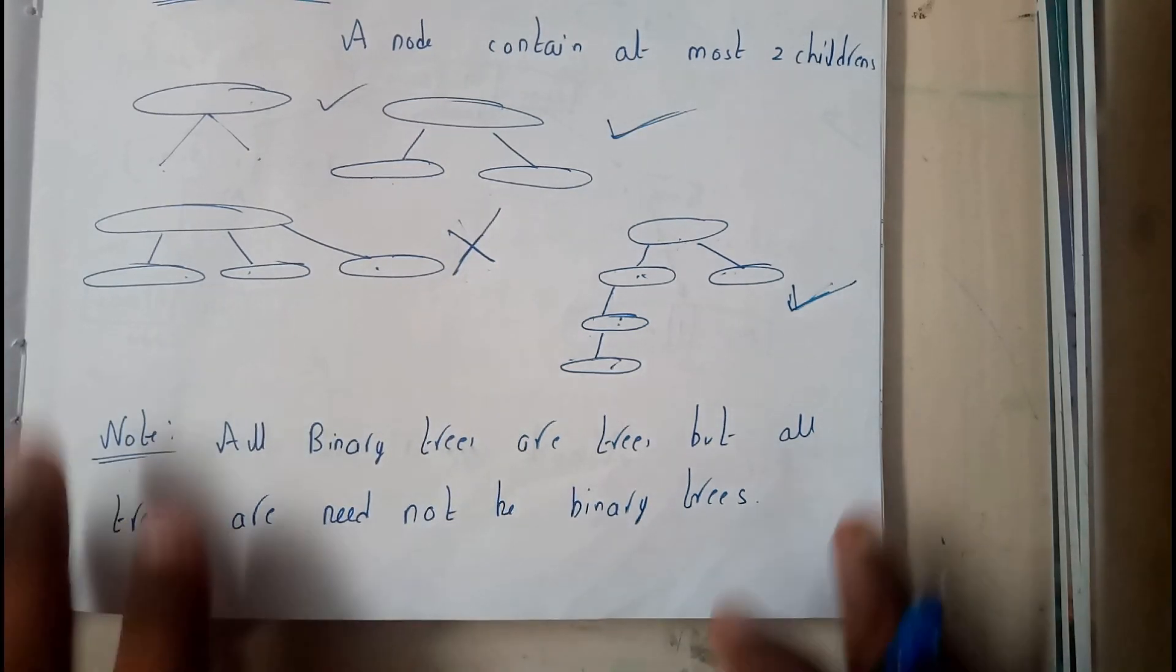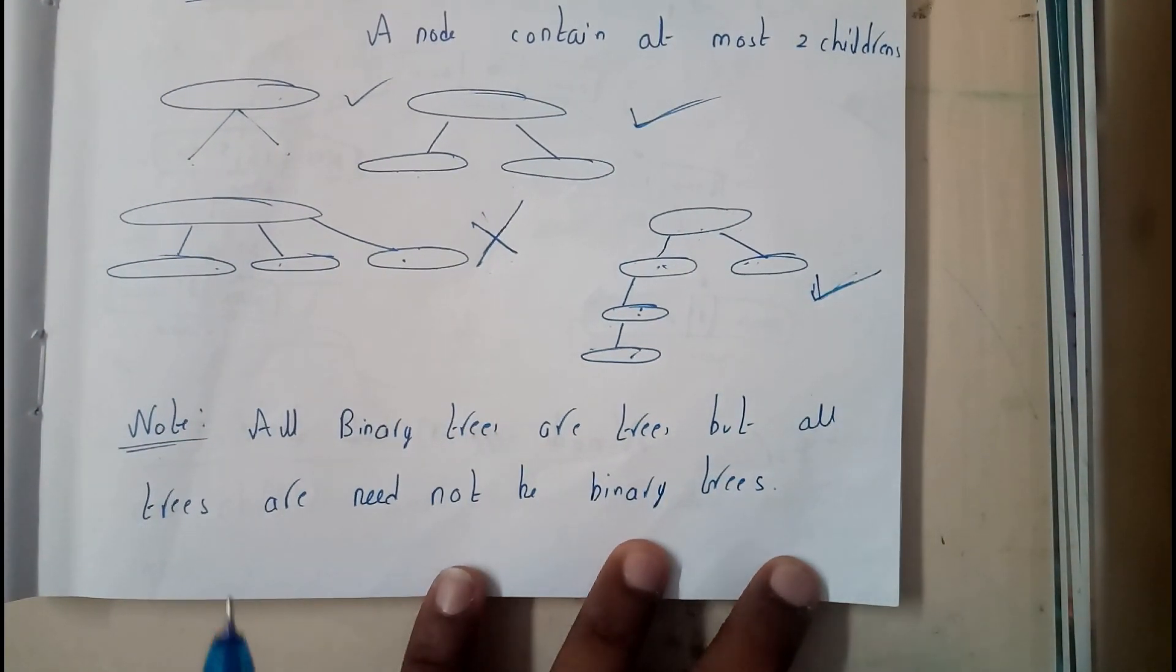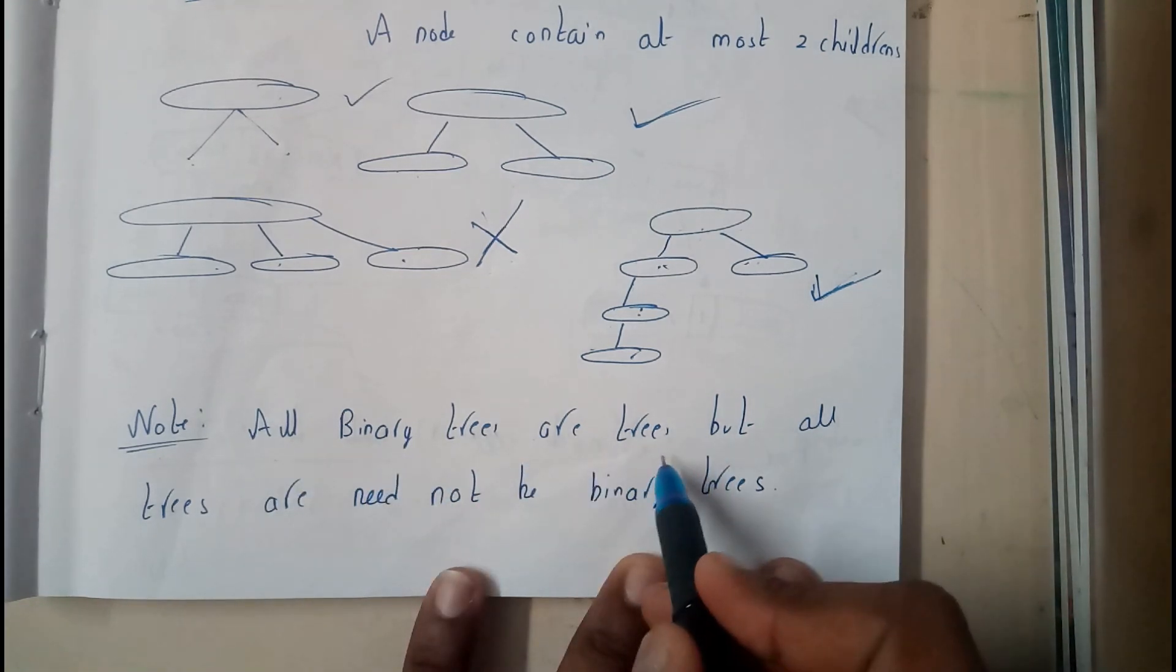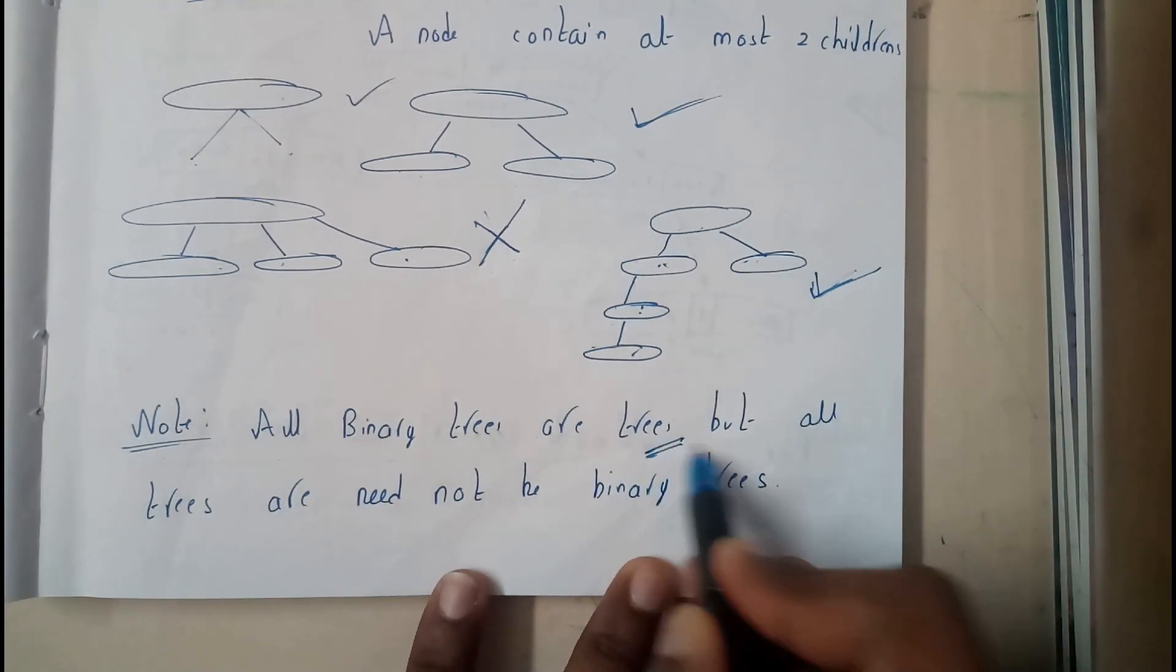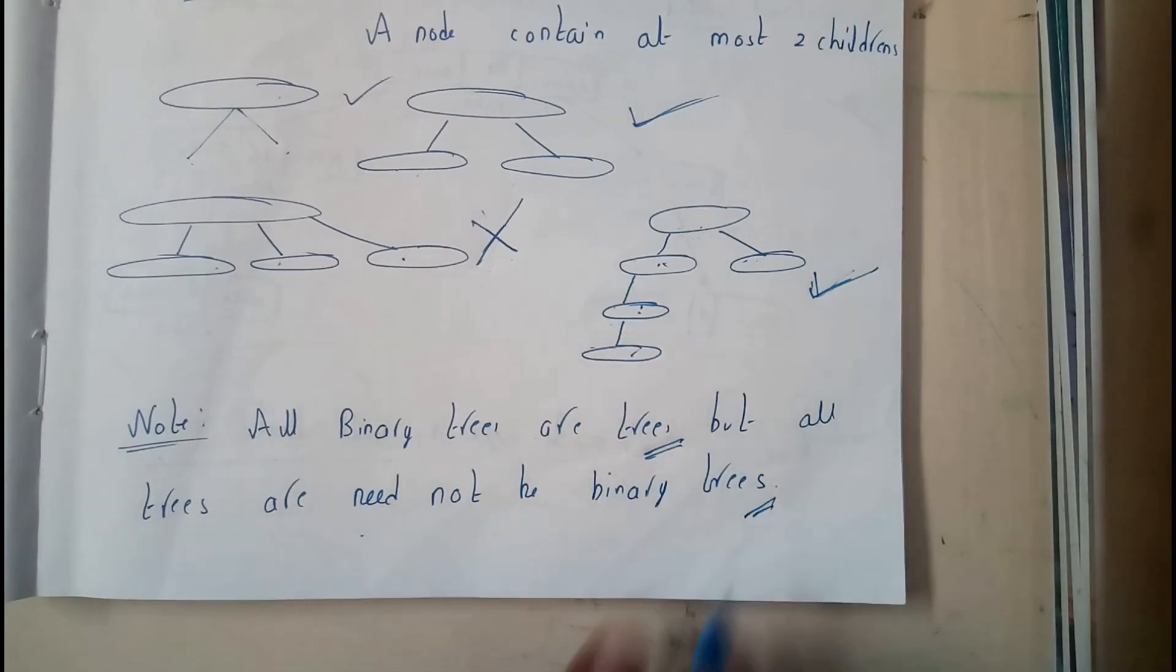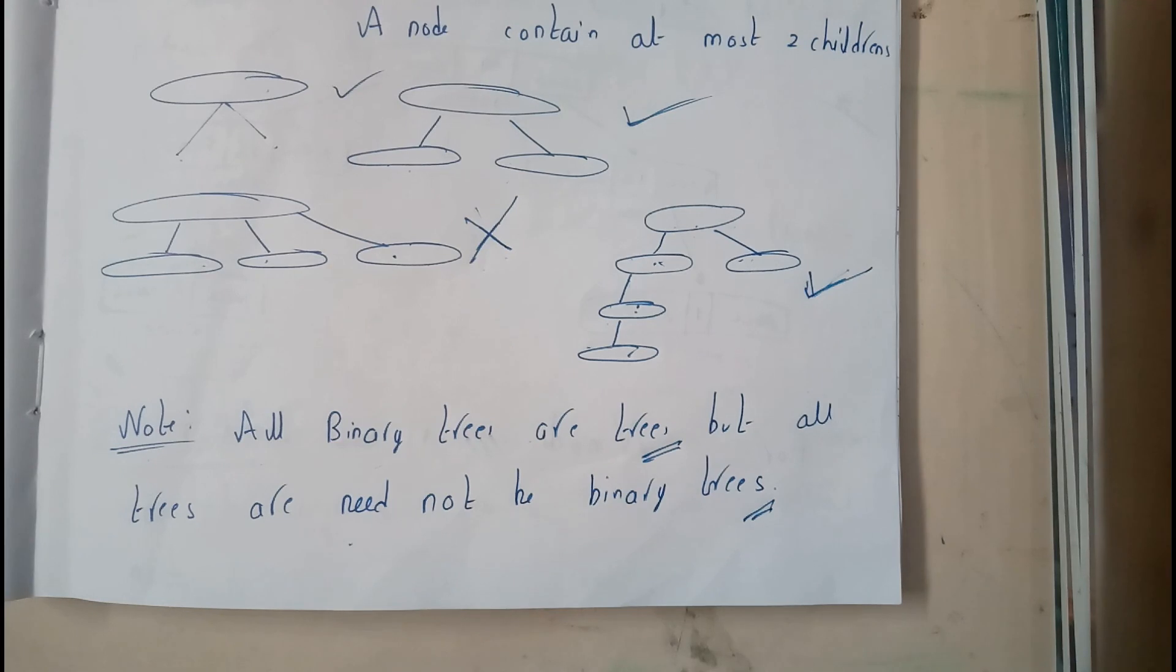So now let us go through a node or a particular condition which is important to remember. All binary trees are trees basically, but all trees are need not to be binary trees. So this is a small statement. This may be asked as a one mark or something like that.